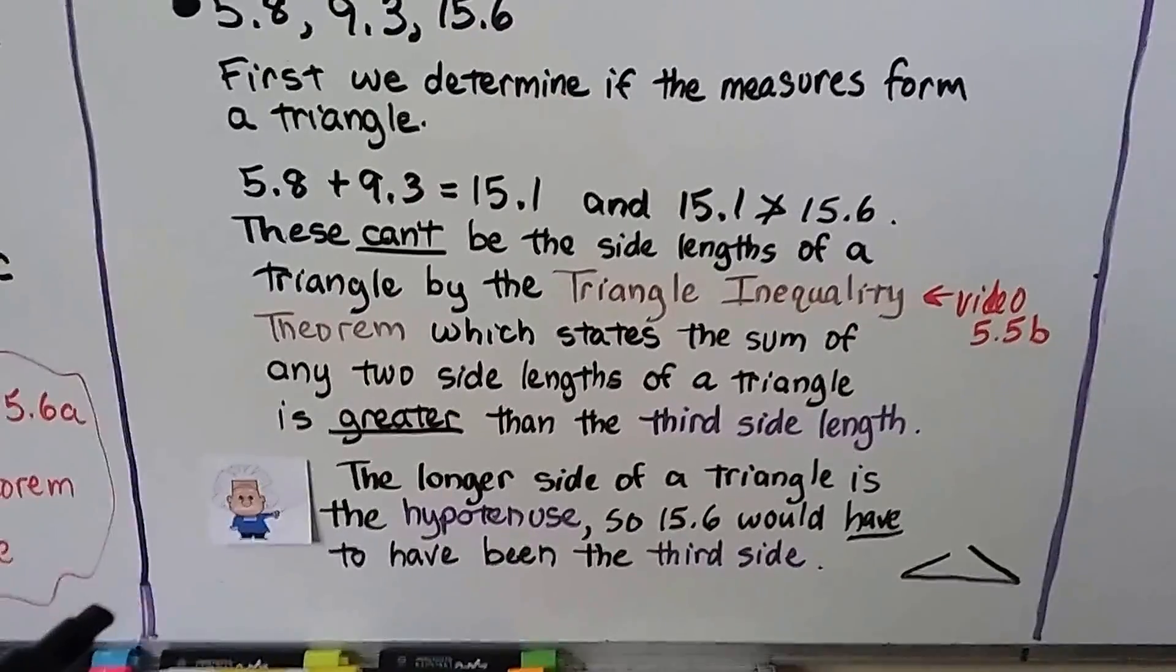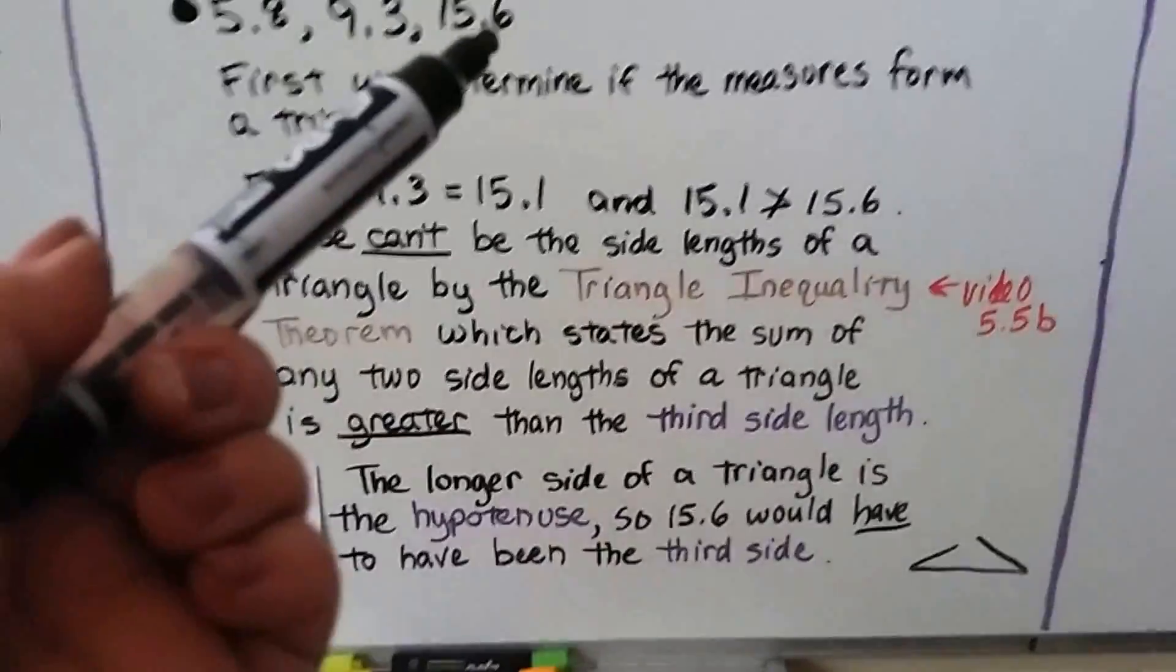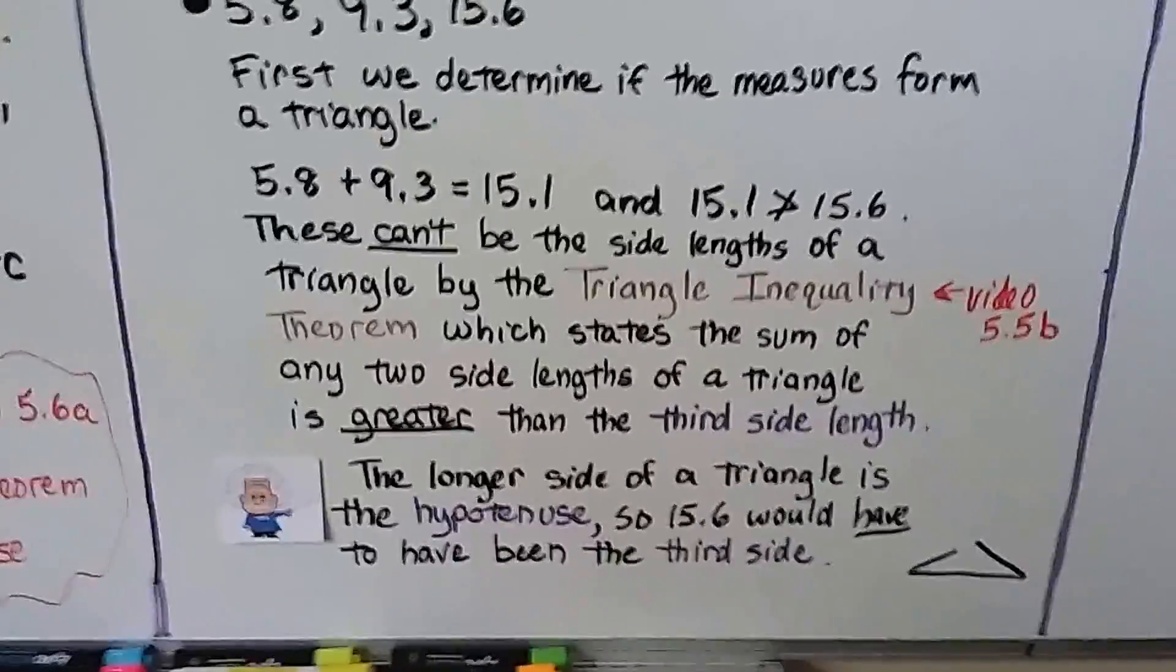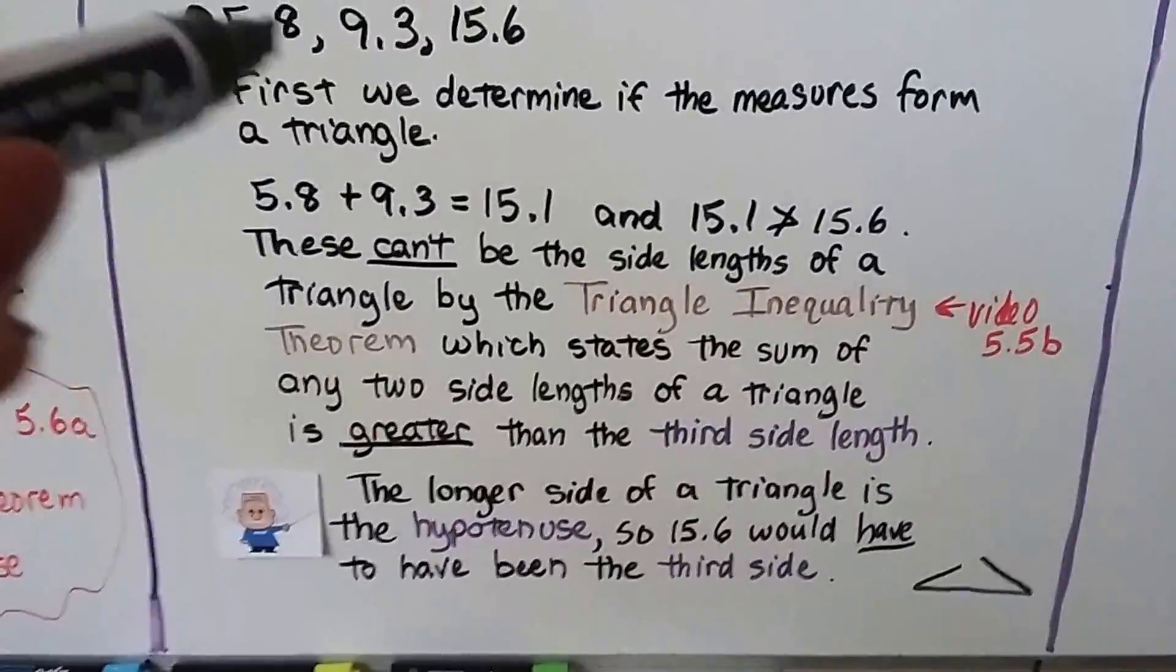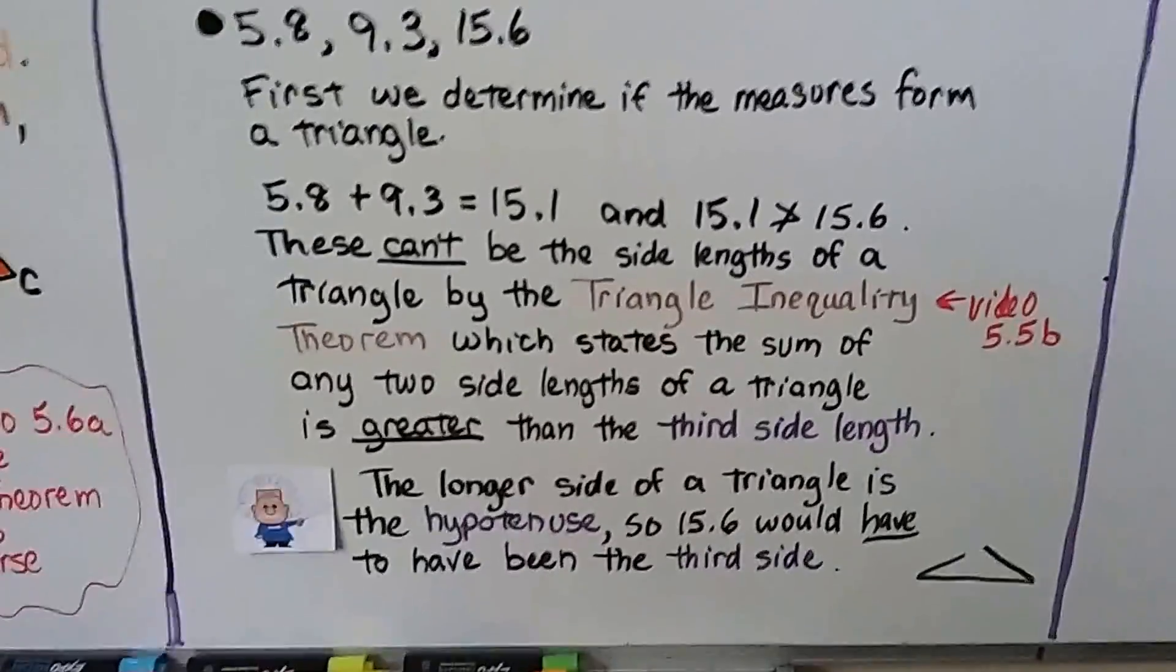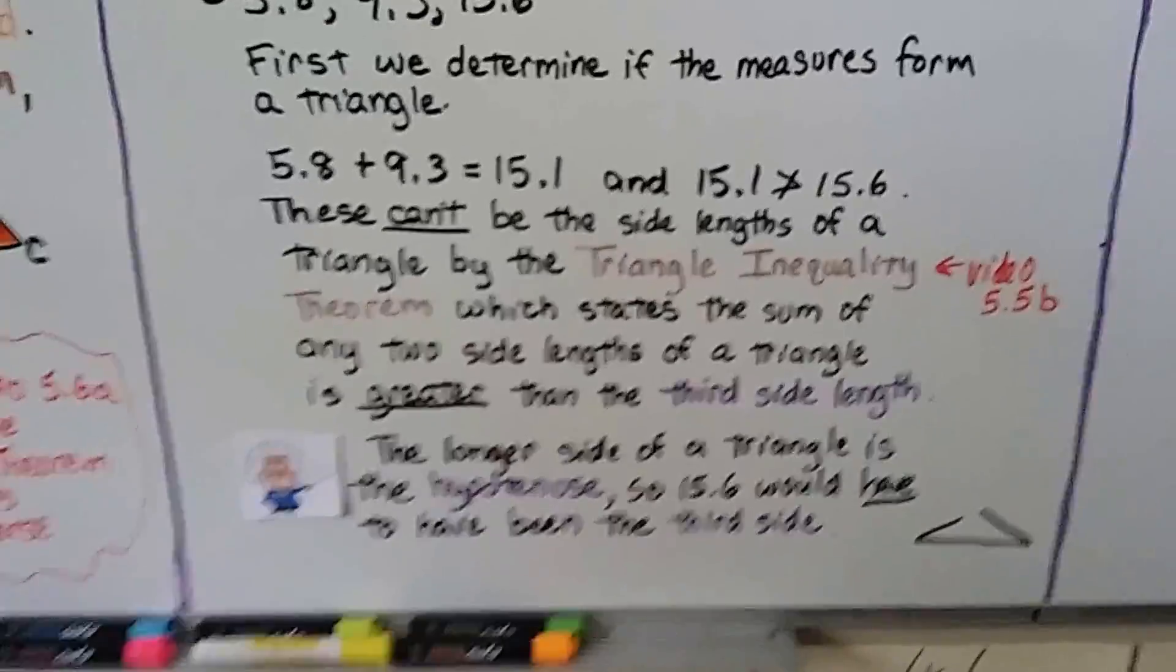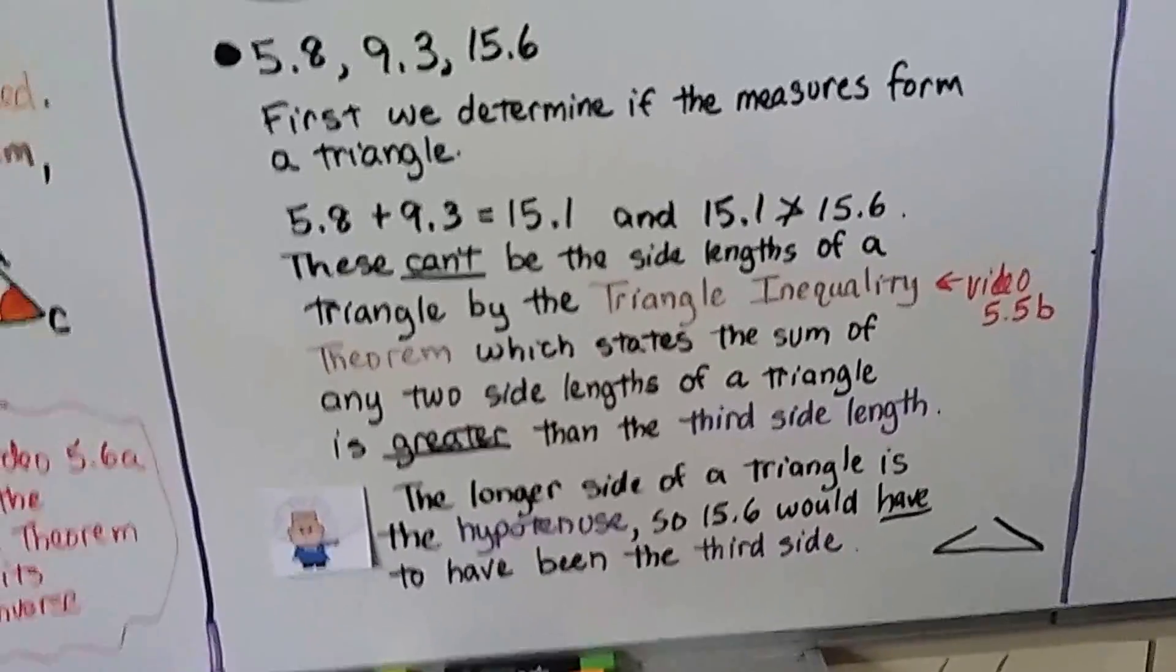The triangle inequality theorem states the sum of any two side lengths must be greater than the third side. So 15.6 is the largest number and would be the third side. The first two would have to total more than 15.6 for the triangle to reach and close at the top.